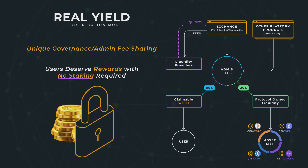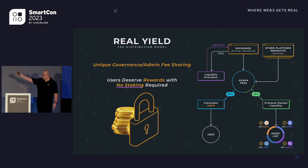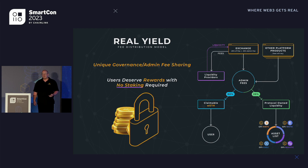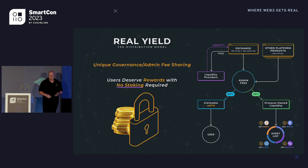Anybody that owns our token will get an even split of those fees. The biggest thing we like to do is provide no staking, so you can earn and redeem these admin fees via our smart contract anywhere — there's no staking required, no liquidity pools you have to put your Gravity into, and you can just keep them in a cold wallet or a hot wallet.